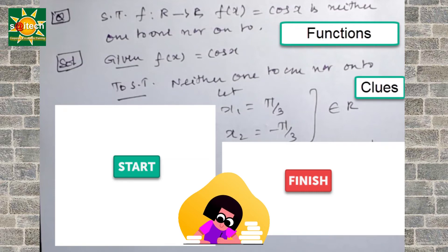Let us consider this sum. Show that the function f from R to R where f of x is defined as cos x, it is neither one-to-one nor onto.